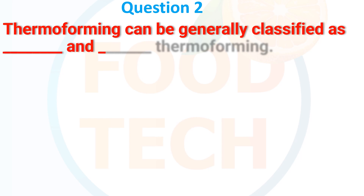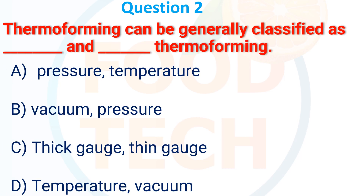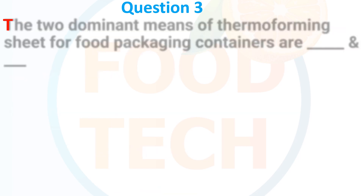Thermoforming can be generally classified as dash and dash. (a) Pressure & Temperature, (b) Vacuum & Pressure, (c) Thick gauge & Thin gauge, (d) Temperature & Vacuum. The answer is (c) Thick gauge & Thin gauge.